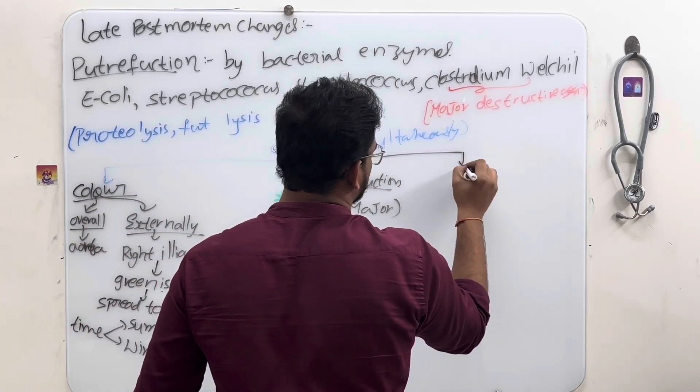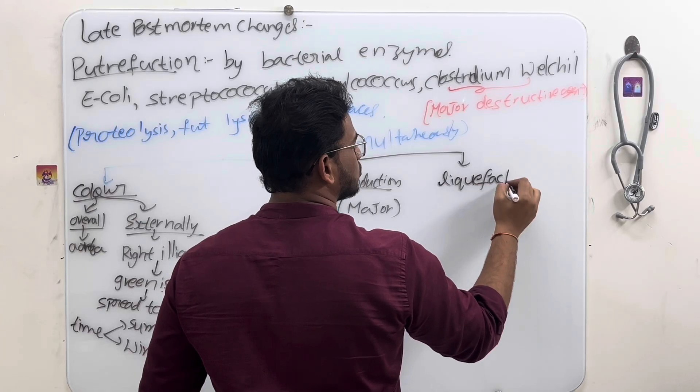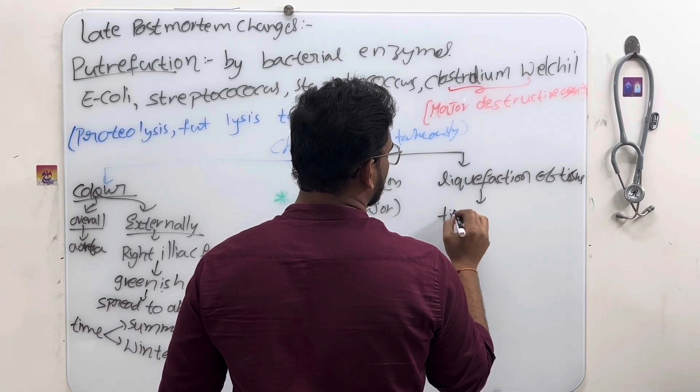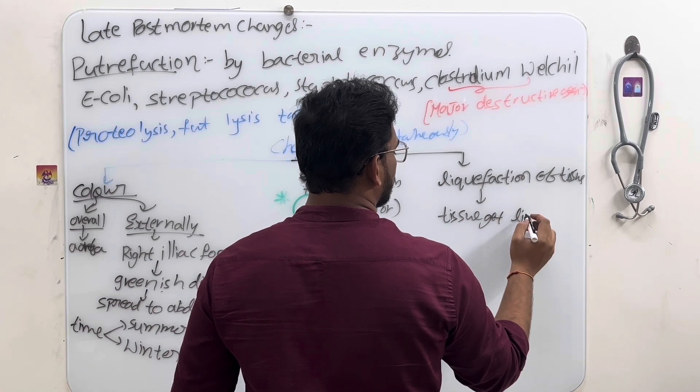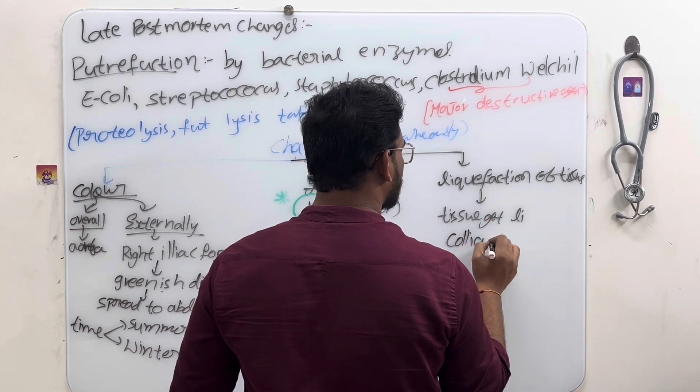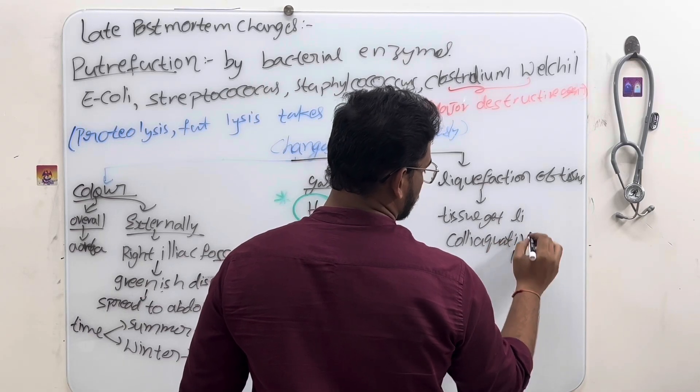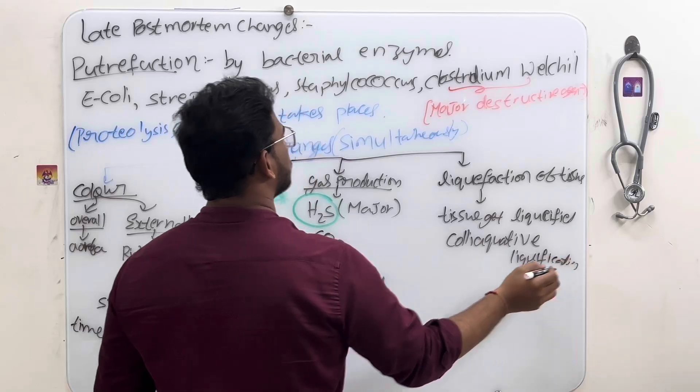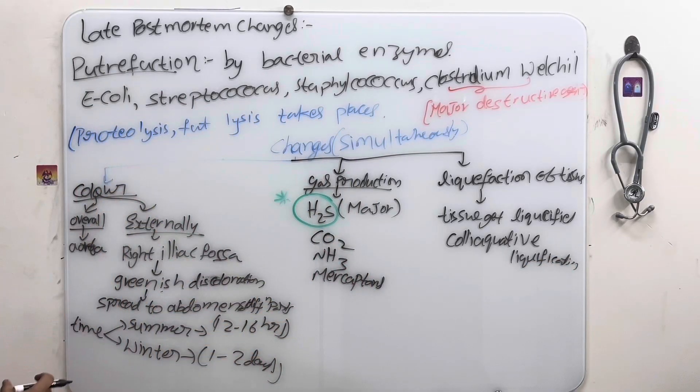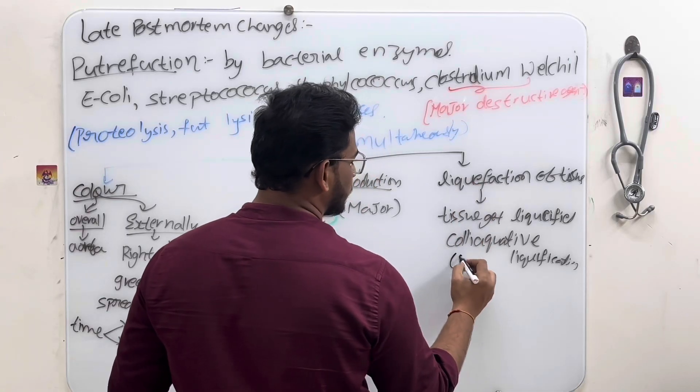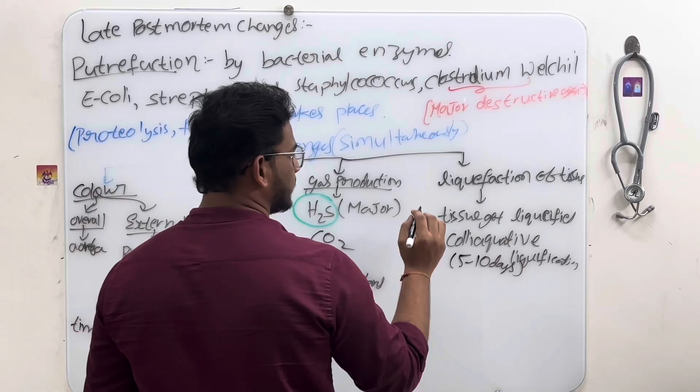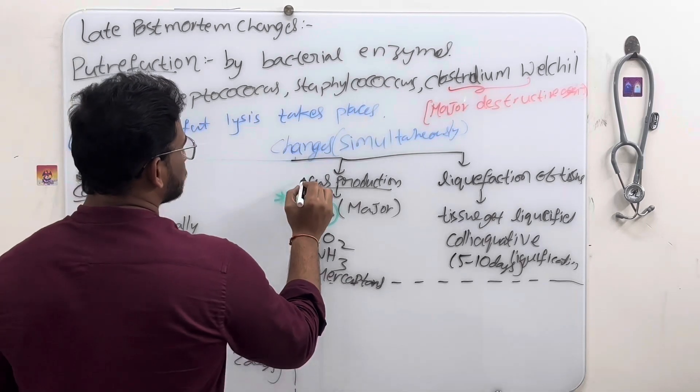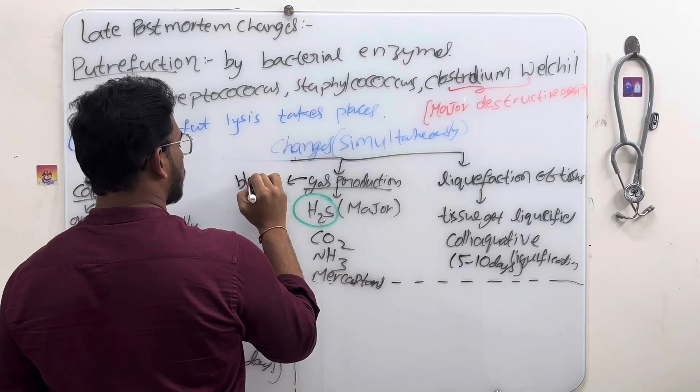Liquefaction of tissues, where every tissue get liquefied. This is all of all our changes that occurs in putrefaction. It takes around 5 to 10 days. These are all we can find time since death. Due to gas production, body face and body get bloated.